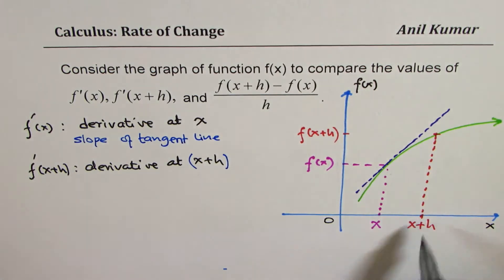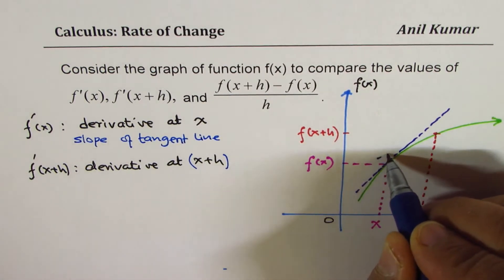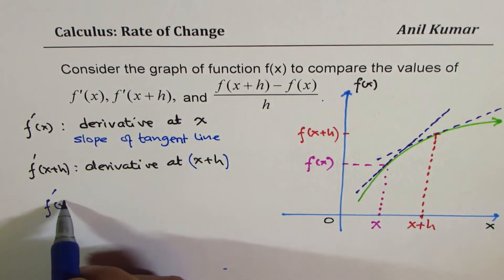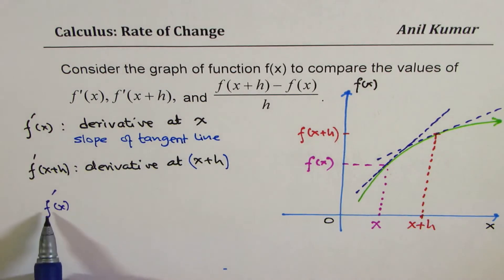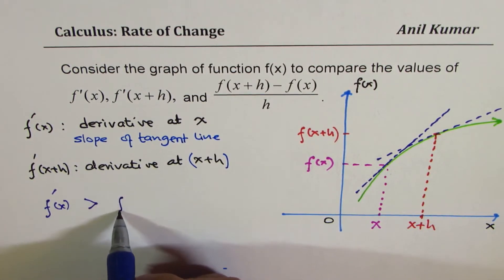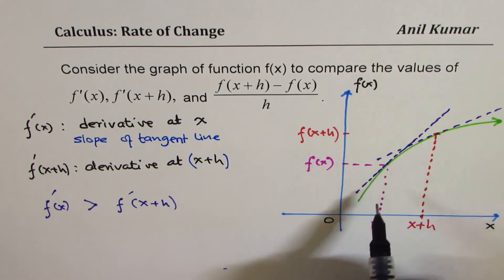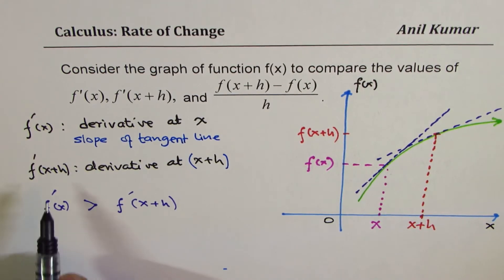Now what is the slope at x plus h? Let me draw another one here. So what we have here is kind of like this. So this is at x plus h. Clearly, you can see that the value of the derivative at x is greater than the value at x plus h. So that is the case because the function is concave down. It is increasing and concave down. And that is why we have this kind of relation between the two derivatives.